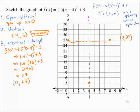Now, if helpful, it's always a good idea to find maybe one other point and its symmetric point to help you draw the curve. So I'm going to find one more point. I'm just going to pick a value. How about 2 for x? f(2) would be 1.5(2 - 4)² + 3. So that would be 1.5(-2)² is 4 + 3. That's 6 + 3, which is 9. So that would give me (2, 9).